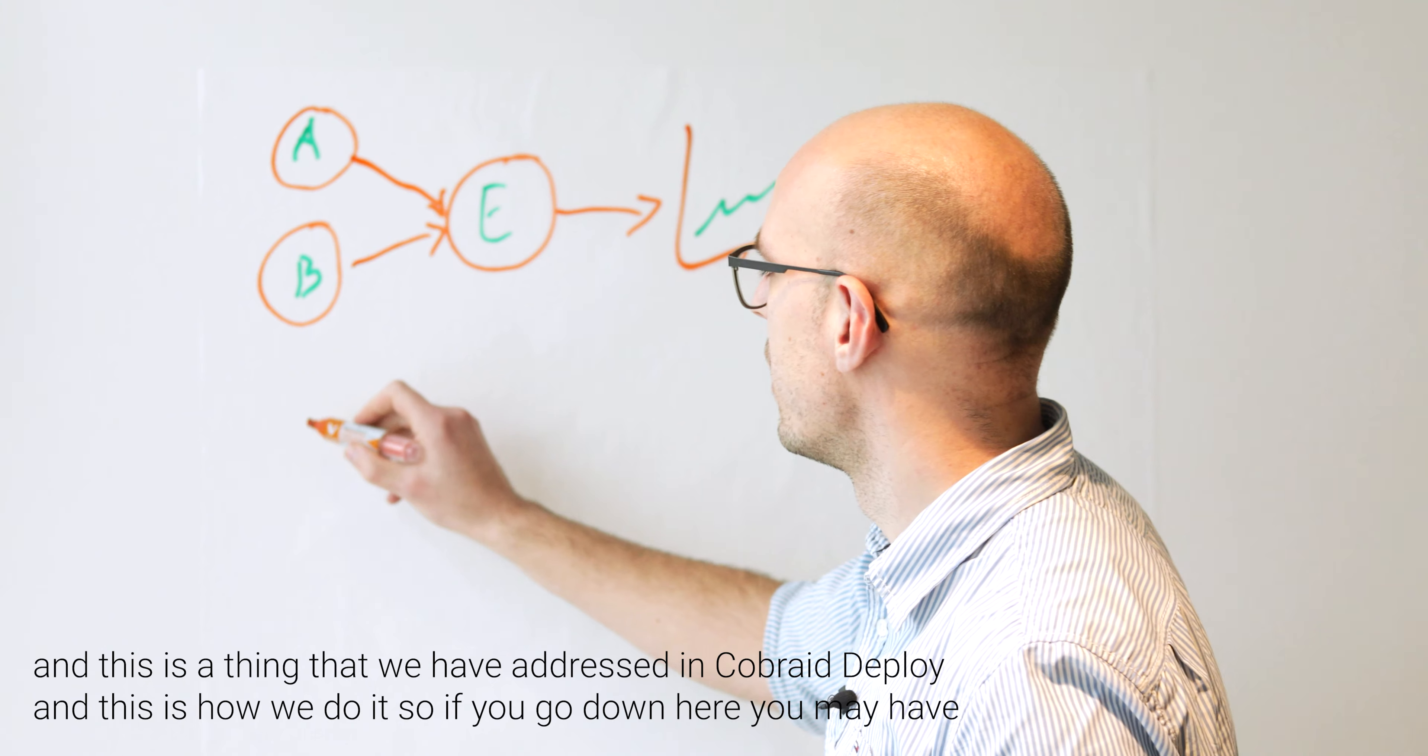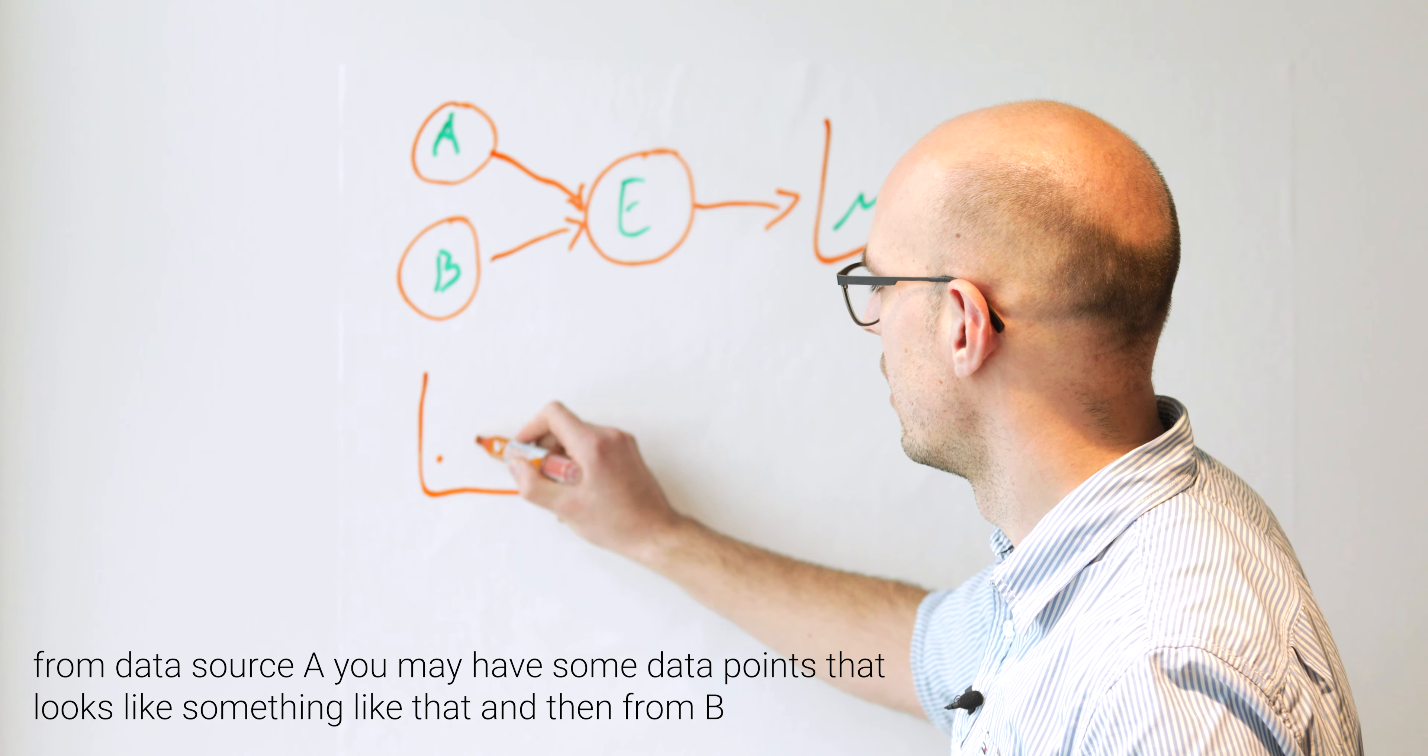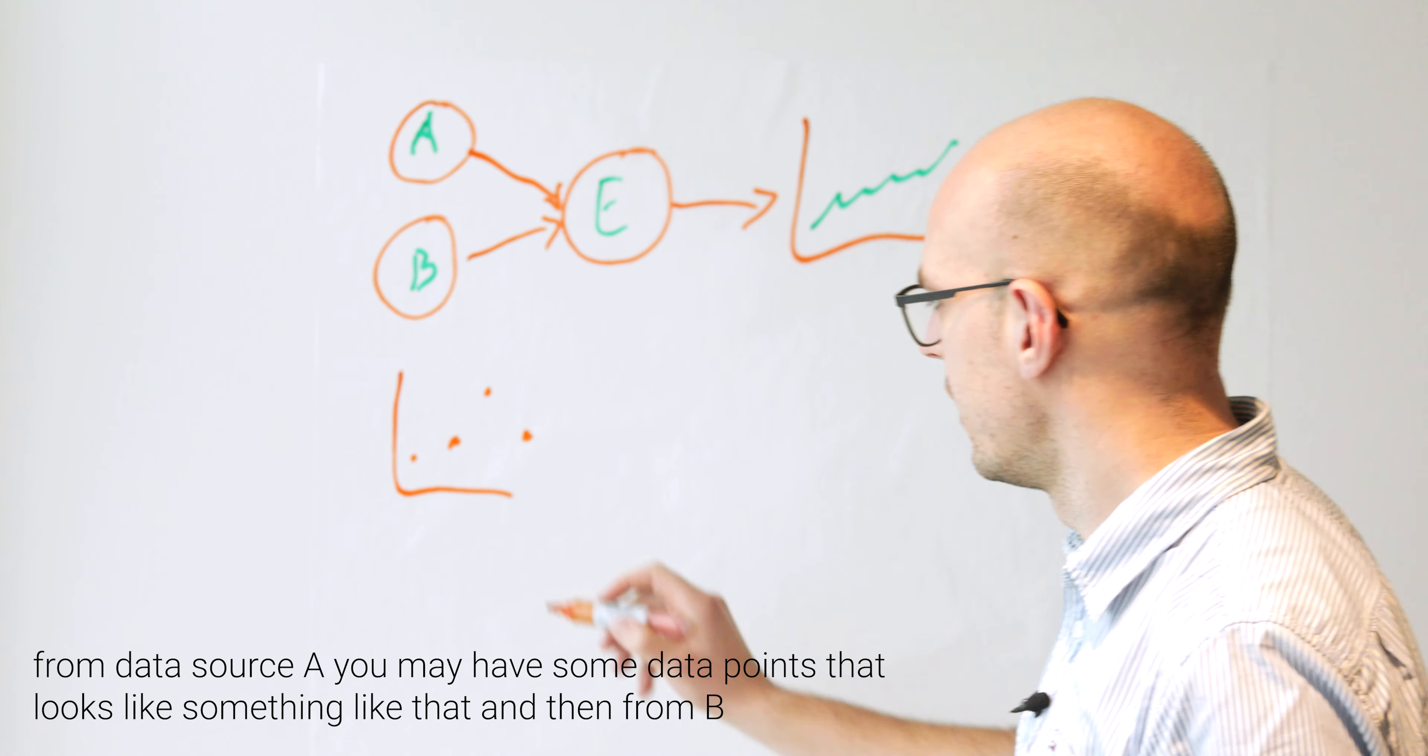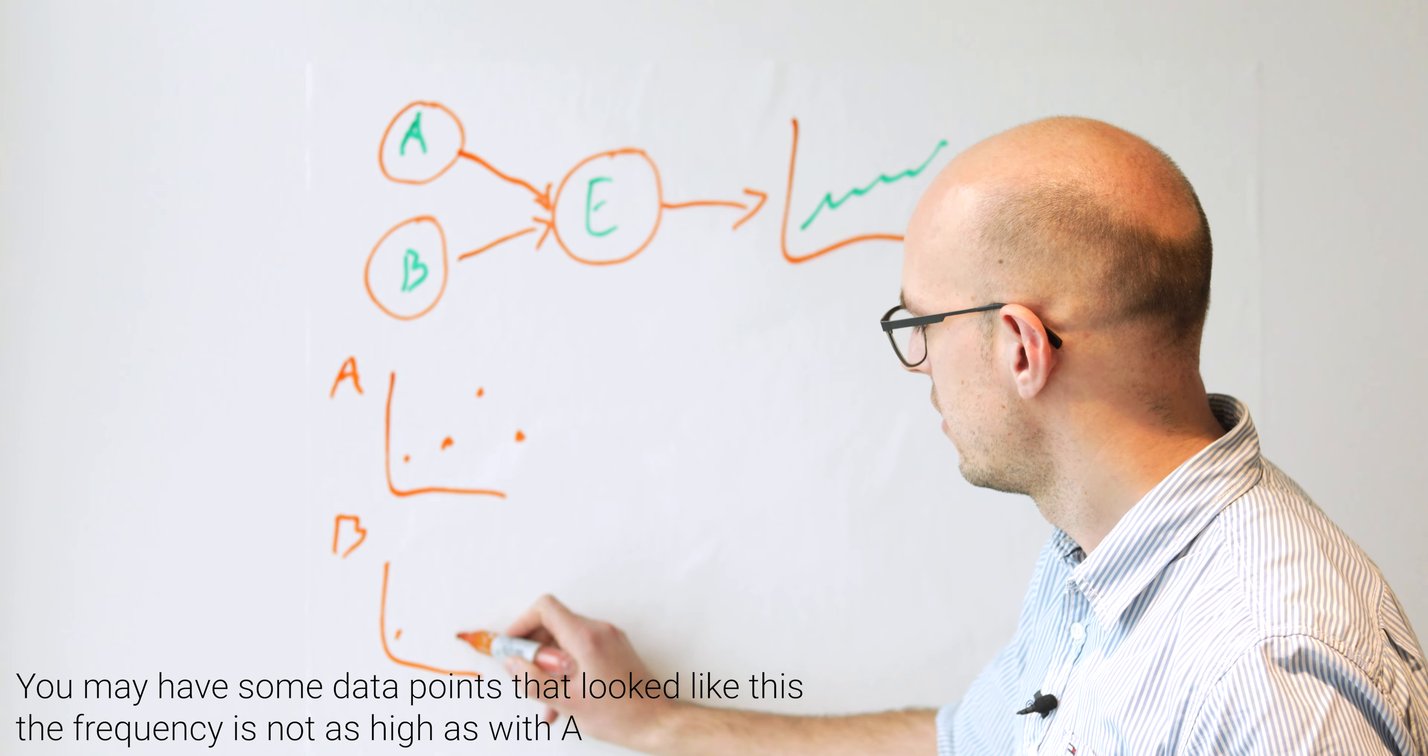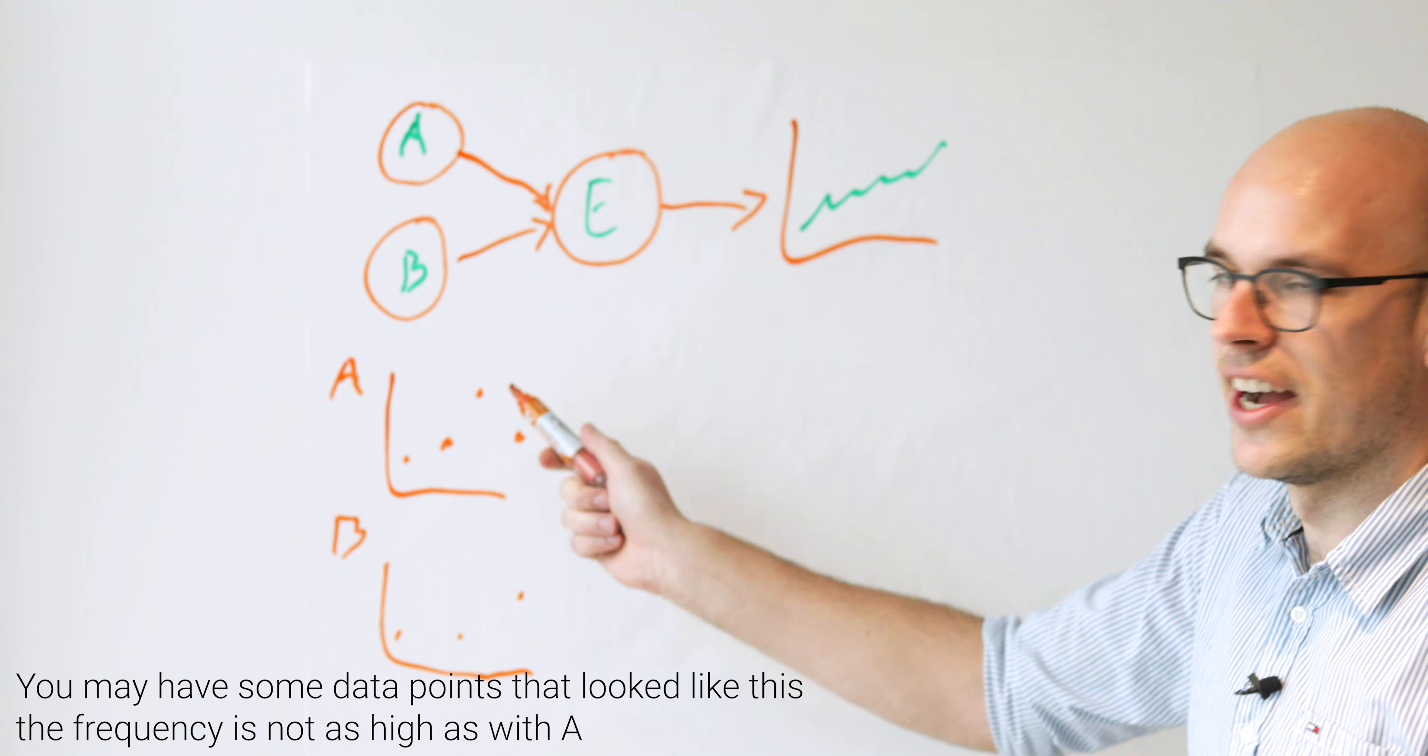So if you go down here, you may have from data source A, you may have some data points that looks like something like that. And then from B, you may have some data points that look like this, the frequency is not as high as with A.